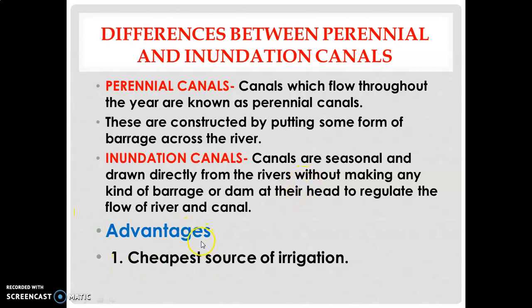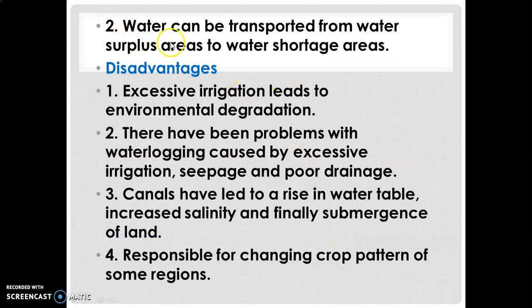The advantages of canal irrigation are: it is the cheapest source of irrigation since we do not have to dig the ground or build walls as in wells and tube wells. Another advantage is that when an area gets flooded, excess water can be diverted to areas with water shortage. For example, the Indira Gandhi Canal diverts water from the Sutlej River to Rajasthan.